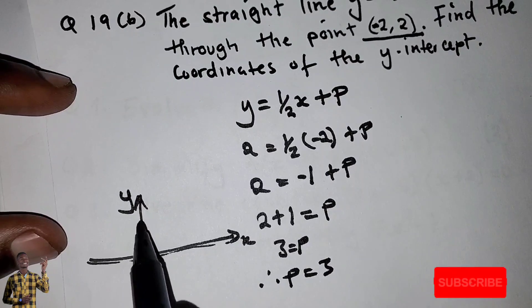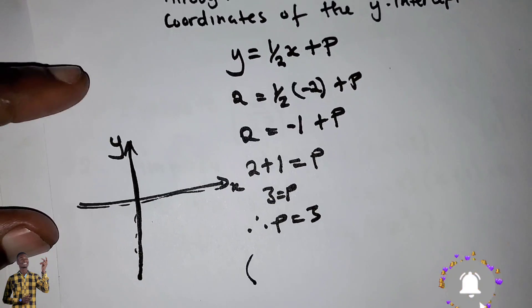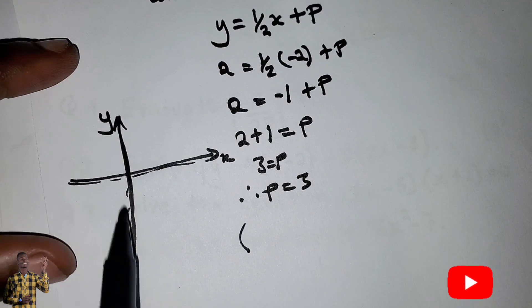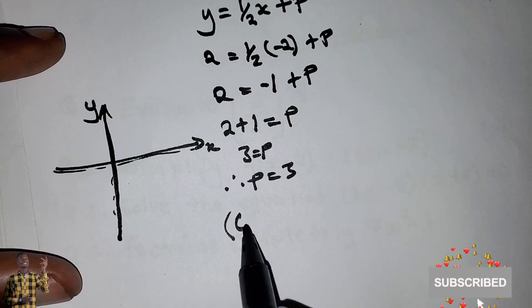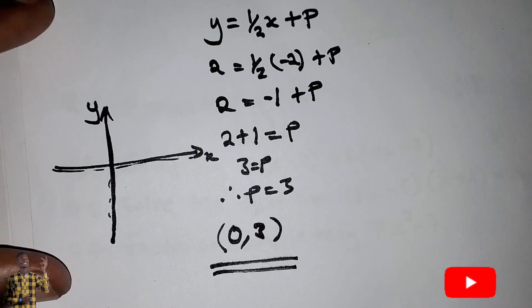The y-intercept is on this line and x is always 0. So the answer is (0, 3). This is the answer.